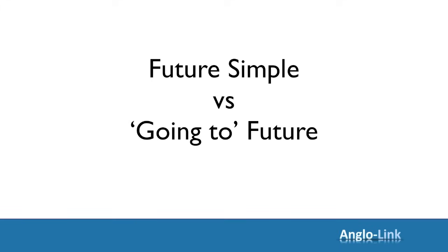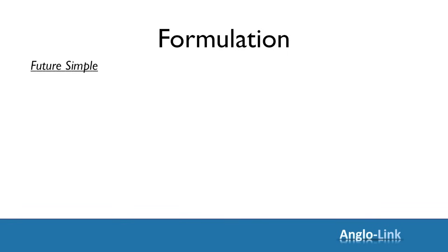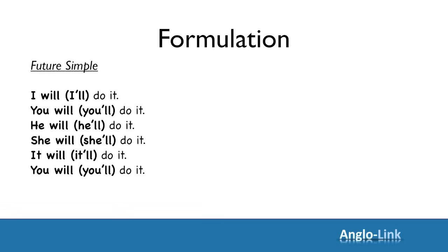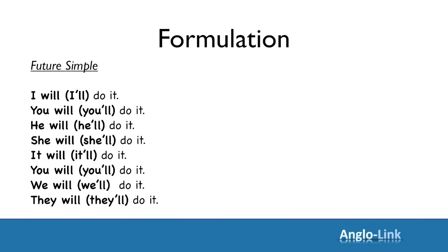Future simple and going to future. Let's look at formulation first. Future simple is really the simplest tense in English. Just add will to your pronoun and then the infinitive. So: I'll do it. You'll do it. He'll do it. She'll do it. It'll do it. You'll do it. We'll do it. And finally, they'll do it.